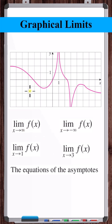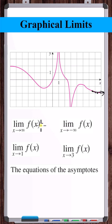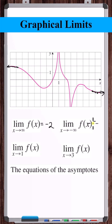Let's evaluate these limits graphically. The limit as x approaches infinity of f of x — the function is approaching a horizontal asymptote, negative 2. The limit as x approaches negative infinity of f of x — as x approaches negative infinity, the function is approaching another horizontal asymptote, positive 2.